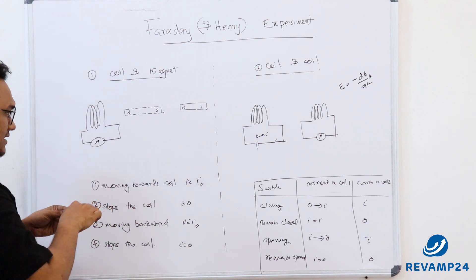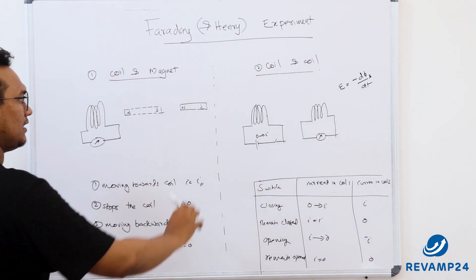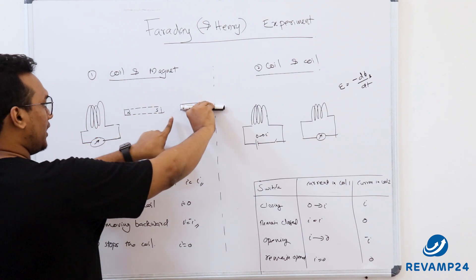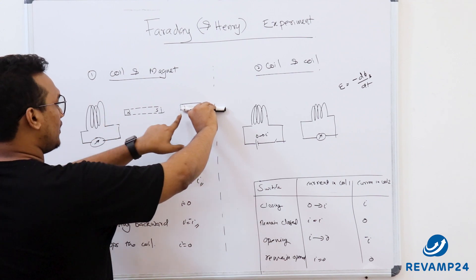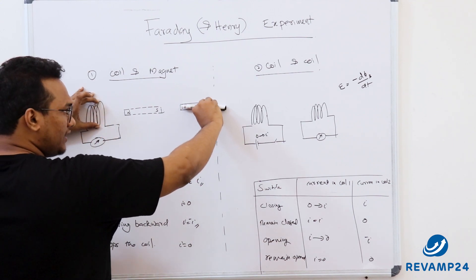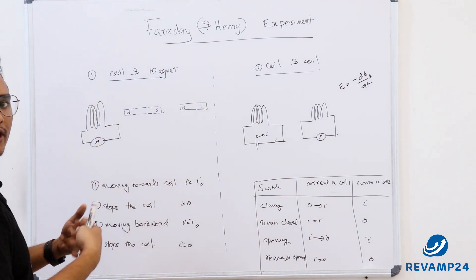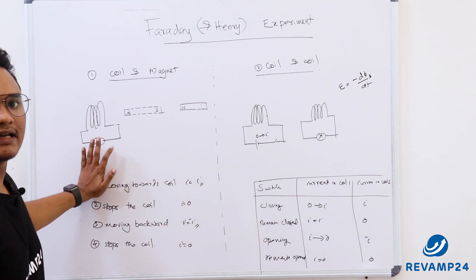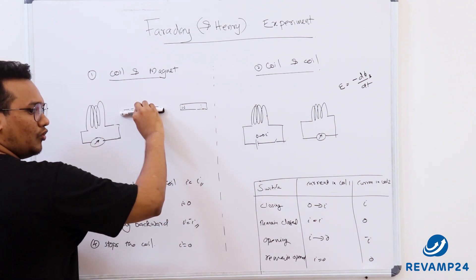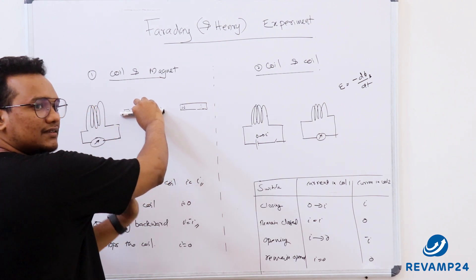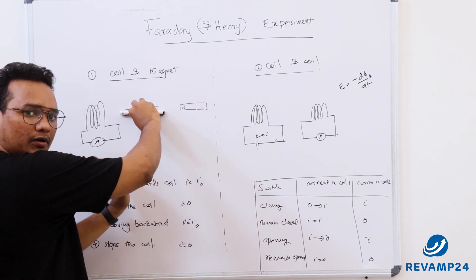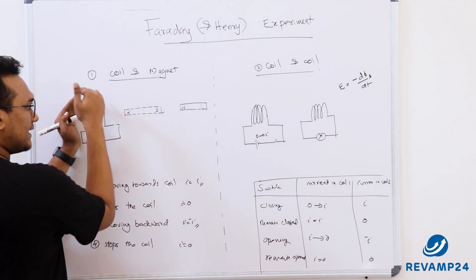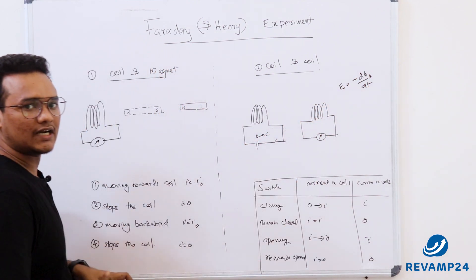When the magnet is far from the coil, the flux linkage is less. Moving the magnet toward the coil increases the flux linkage more and more — so there is a change in magnetic flux, it is increasing, and a current is induced. When movement stops, the flux linkage remains constant — say 10 Weber — so there is no change in flux and no current. Moving the magnet back decreases the flux linkage, which is still a change in flux, so it induces an EMF.